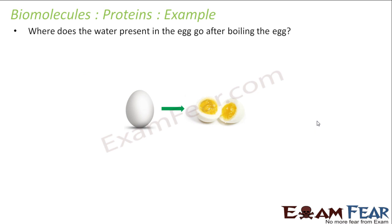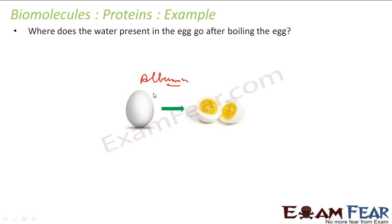The next question is: where does the water present in the egg go after boiling? We've seen that the egg contains a protein called albumin, which is a globular protein. When you boil the egg, the protein gets denatured and coagulates. The water present in the egg is then absorbed by this coagulated protein — it acts like a sponge. The water is not evaporated or flowing away; it stays inside the shell, absorbed by the coagulated protein.